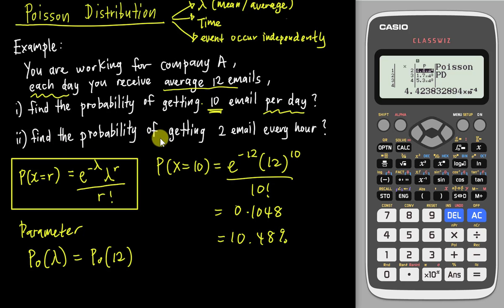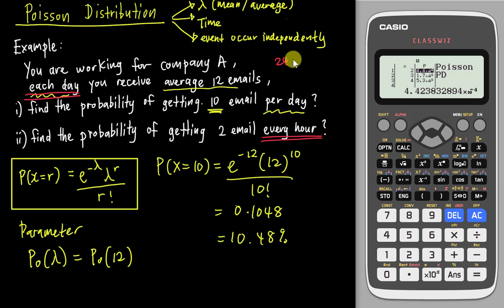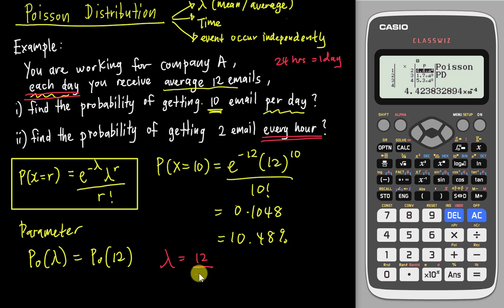For the second question, they ask for the probability of getting 2 emails every hour. The tricky part is that the given average is 12 emails per day, but now we need it per hour. Since there are 24 hours in a day, we divide: lambda = 12 ÷ 24 = 0.5 (or 1/2) per hour.